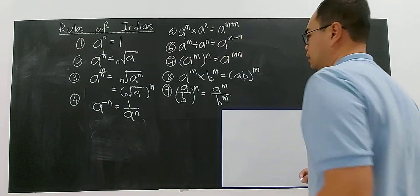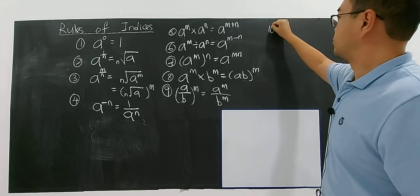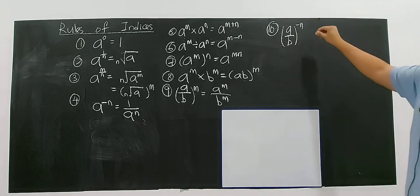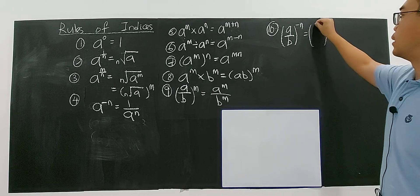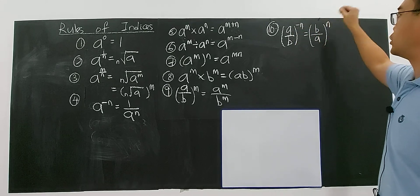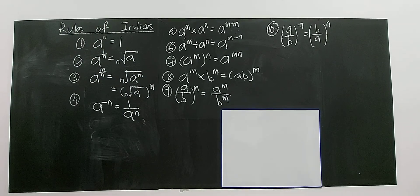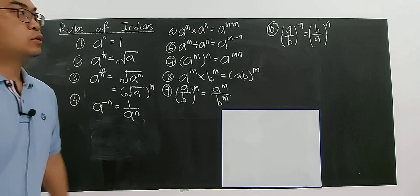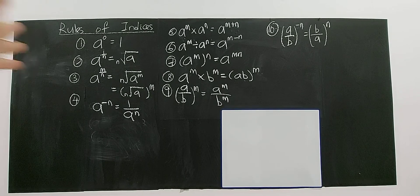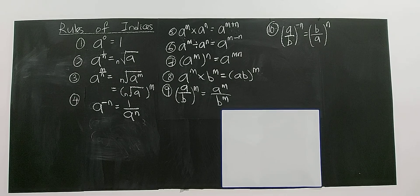If you have A over B to the power of negative N, you can reverse it: A over B becomes B over A, and the negative becomes positive. I have now listed all the important index laws — the rules of indices. There are nine rules. Rather than memorizing all these formulas, you need to do practice. With practice, you will master everything and no longer need to memorize the formulas. Let's look at some examples.